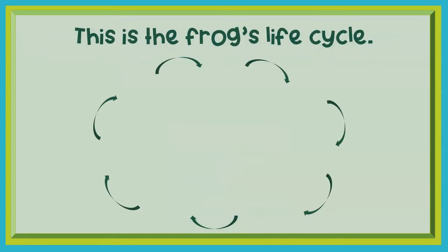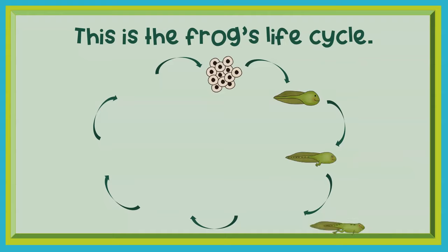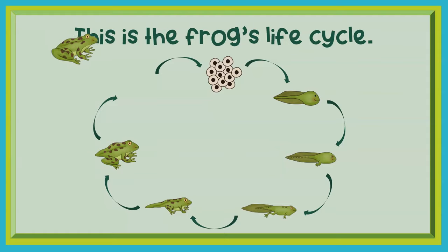This is the frog's life cycle: eggs, tadpole, two legs, four legs, lives on land, becomes bigger, turns into an adult frog — and then lays eggs to begin the cycle again.